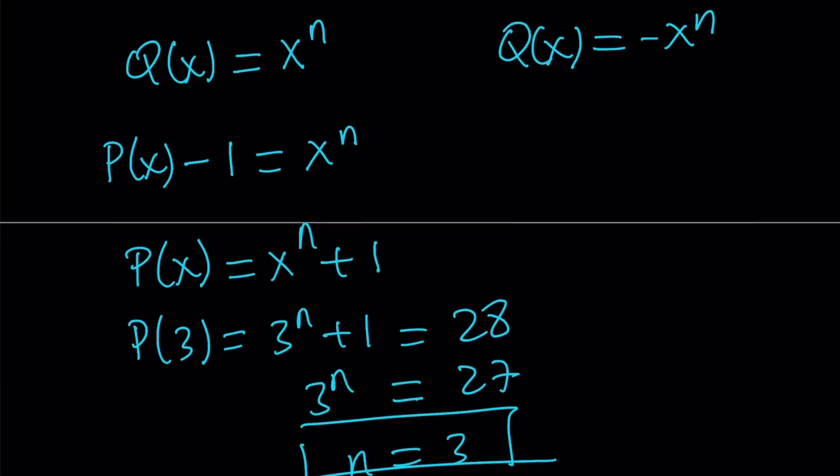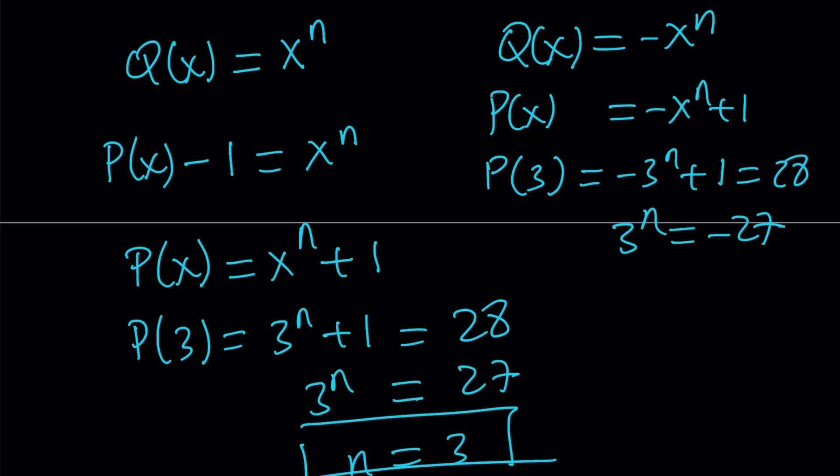But what about the negative 1? Now, if Q of X is equal to negative X to the power N, you're going to get P of X minus 1 equals negative X to the N plus 1. Let's go ahead and replace X with 3 and set it equal to 28. So P of 3 in this case is going to be negative 3 to the power N plus 1, and when that equals 28, this means 3 to the power N is equal to negative 27. But unfortunately, with real numbers, this is impossible. Therefore, negative X to the power N is just not going to work.